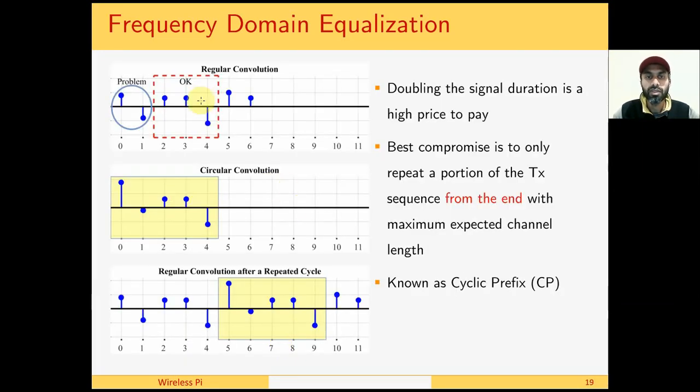To solve this question we look at these figures. This is a regular convolution between a transmit signal and a wireless channel. And this is a circular convolution between the same two signals. We can see that the result of both convolutions is the same at the end but different at the start.